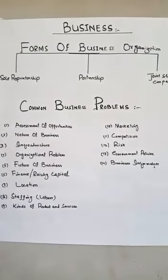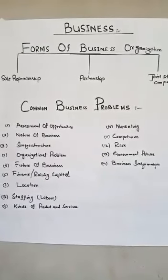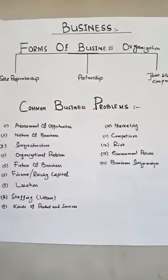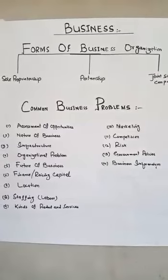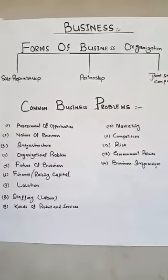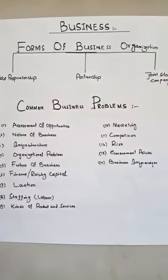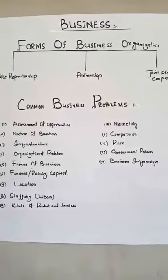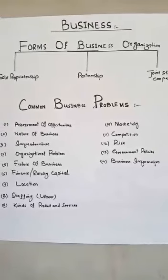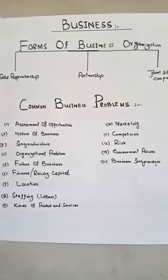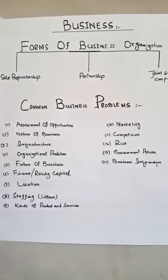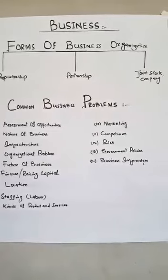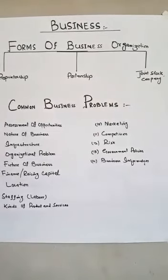My second topic is forms of business organization. There are three forms of business organization. Number one, sole proprietorship business. Number two, partnership business. And number three, joint stock company.